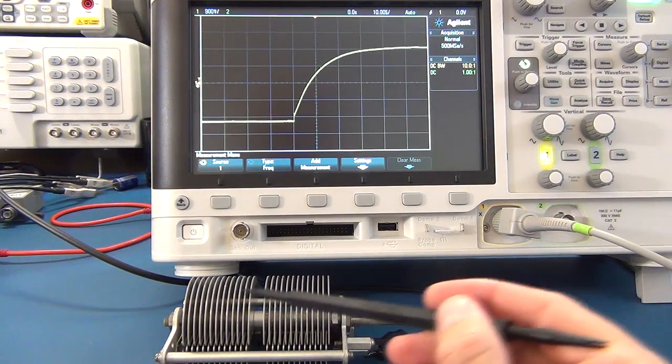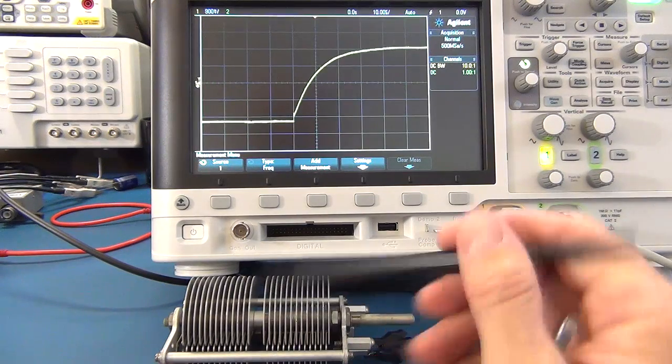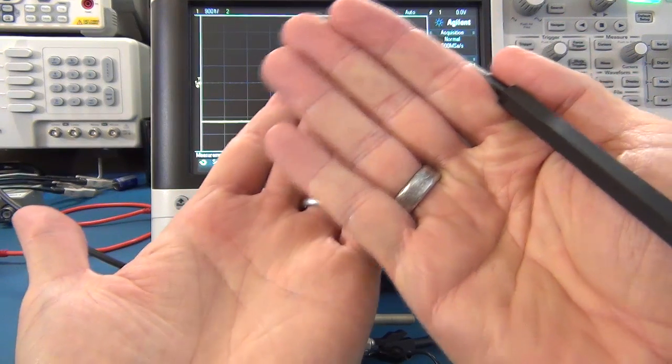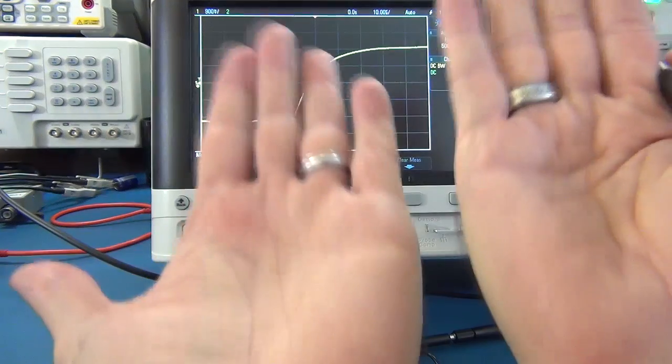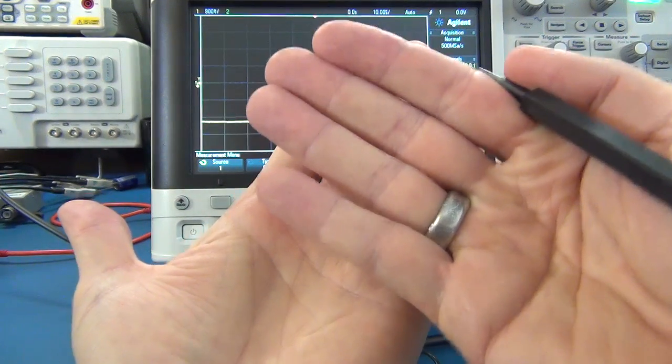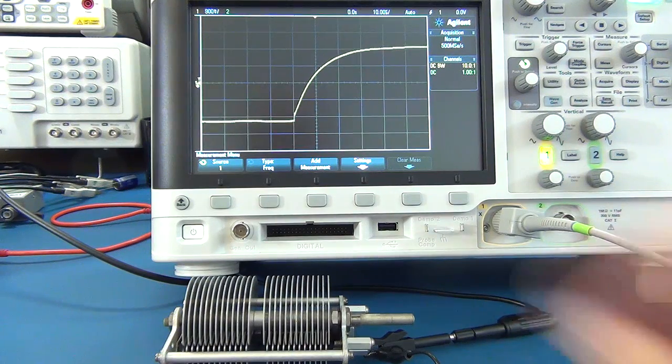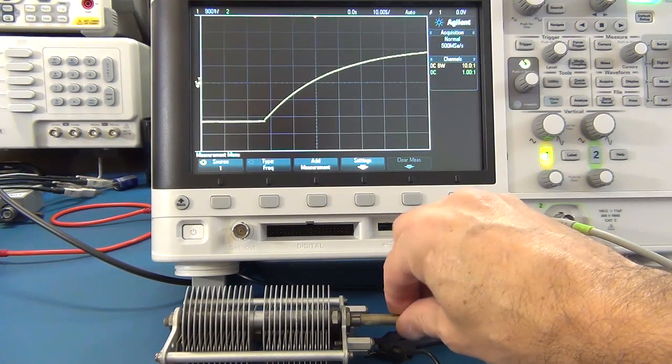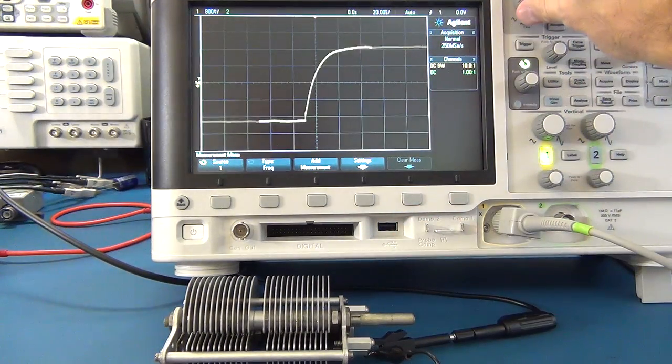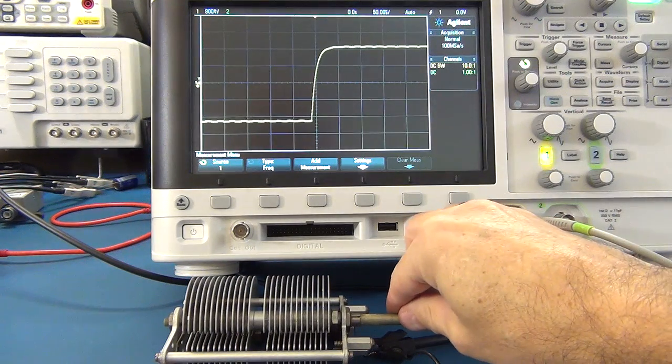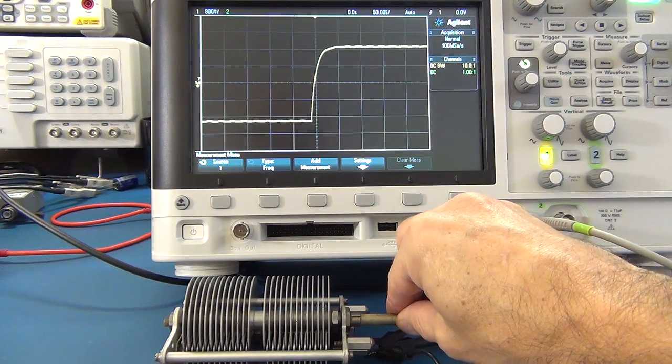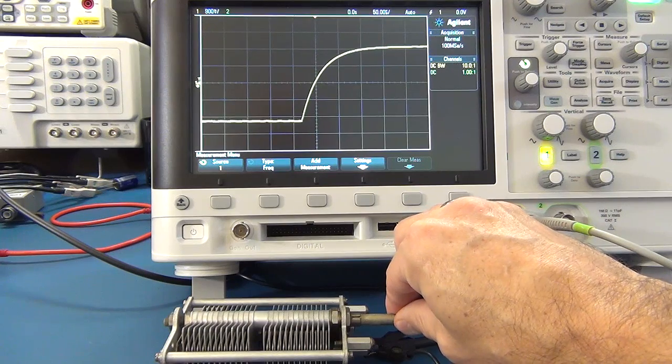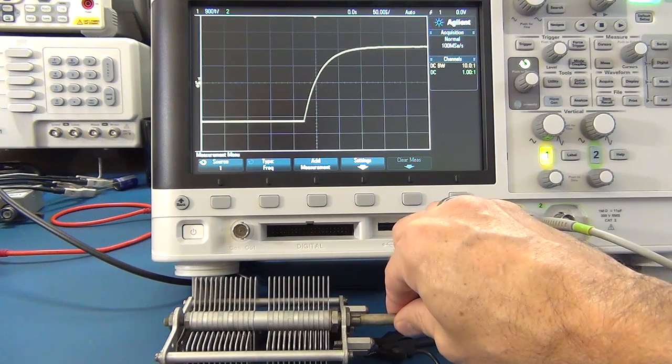I've got the capacitance in its least capacitance value because we've got the plates up so they're not intersecting each other. Remember capacitance is going to increase when you've got a larger surface area of plates. So by moving that dial I'm going to bring them in, so in theory I'm going to increase the capacitance. Let's have a look. As I turn this, what do you see? See how the slope of that wave changes?